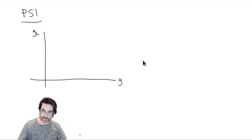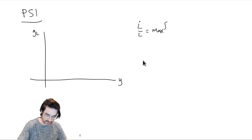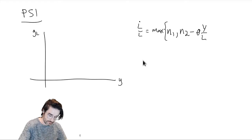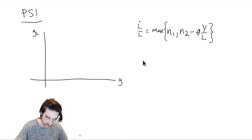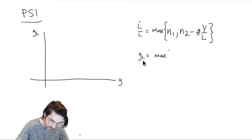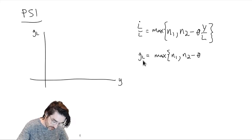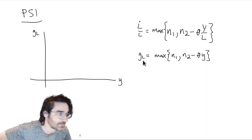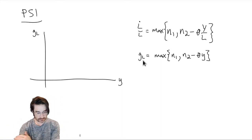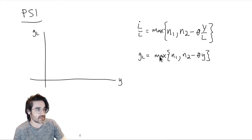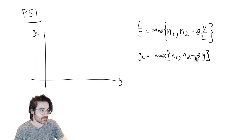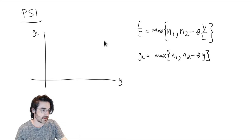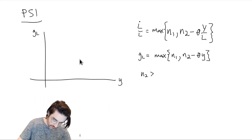Anytime you have something like a max, you have two sides — side A and side B — and you return whichever one is larger. So if N1 is larger than the right-hand side, you get N1; if the right-hand side is larger, you get N2. We've assumed N2 is greater than N1, which is greater than N0. So working through it: at Y equals 0, it's going to be N2, since N2 is the dominant term.